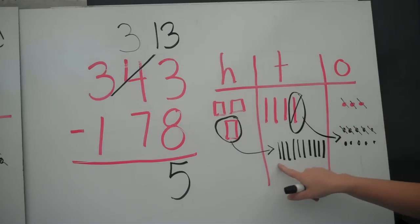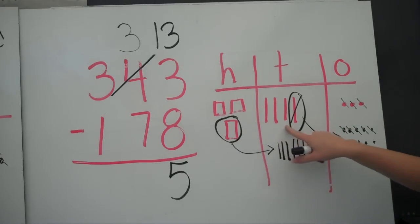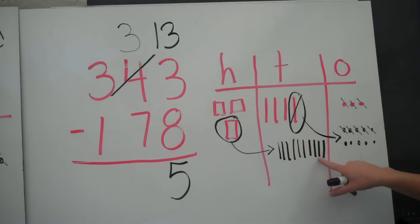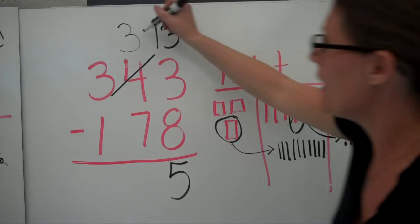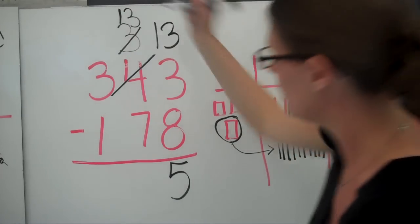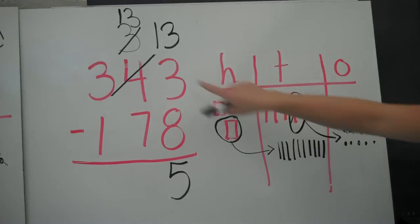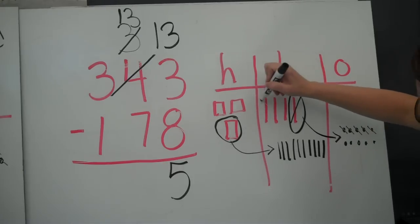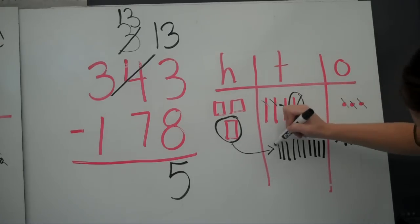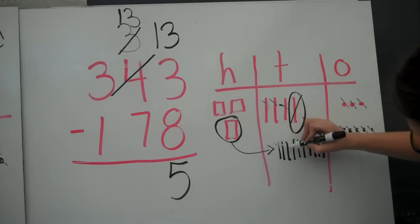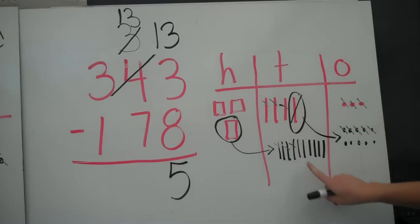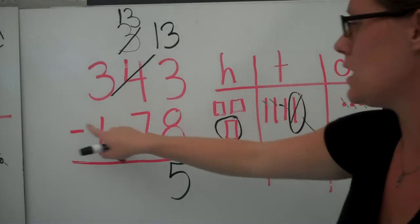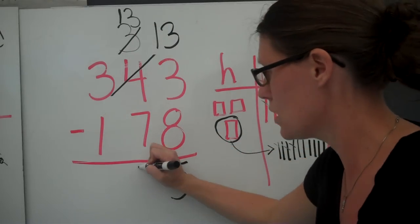Now I no longer have 3 tens. I have 13 tens. So I'm going to subtract 7 — I'm going to get rid of those 7 tens. I have 13 minus 7 equals 6.